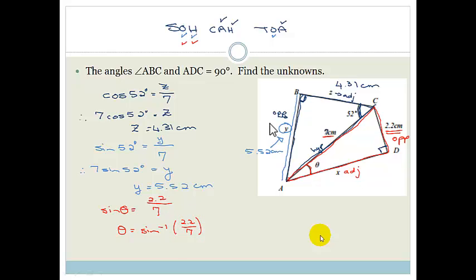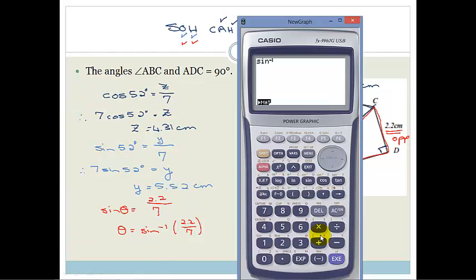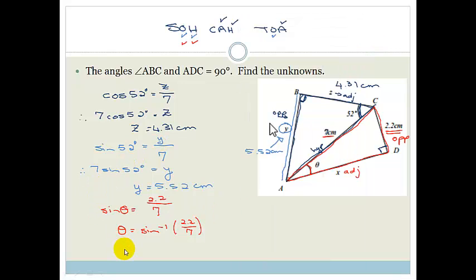So the way we write this is second function arcsine of 2.2 over 7. So what we need to do now is get out our calculator. So out it comes and we're going to clear it. And remember how to do this. We're going to go shift sine because we want that second function sine. Bracket 2.2 divided by 7. Close the bracket. And we end up with 18.32. Therefore we say that theta is equal to 18.32 degrees. So that's our little angle.